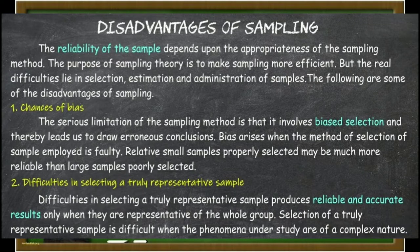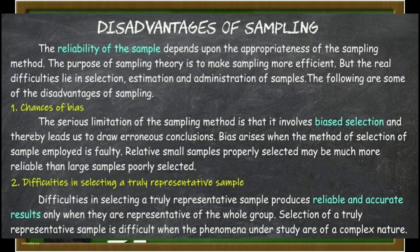The second disadvantage of sampling is difficulties in selecting a truly representative sample. Samples produce reliable and accurate results only when they are representative of the whole group. Selection of a truly representative sample is difficult when the phenomena under study are of a complex nature.